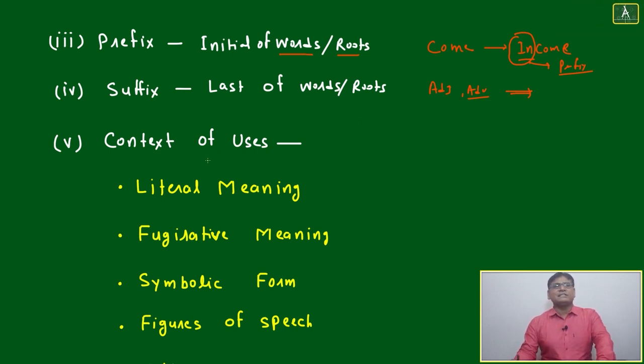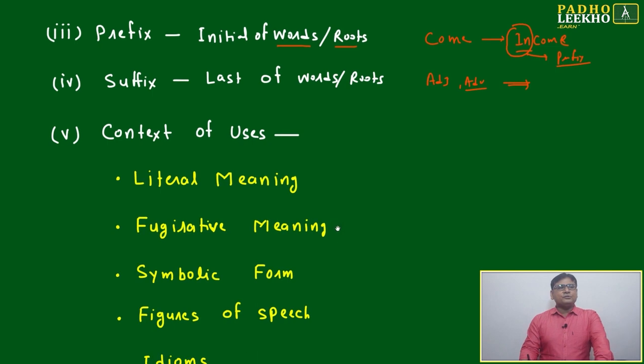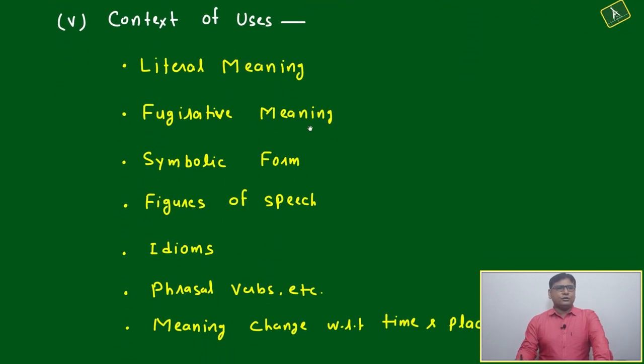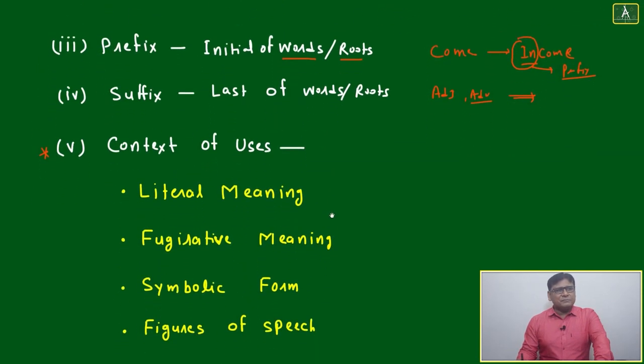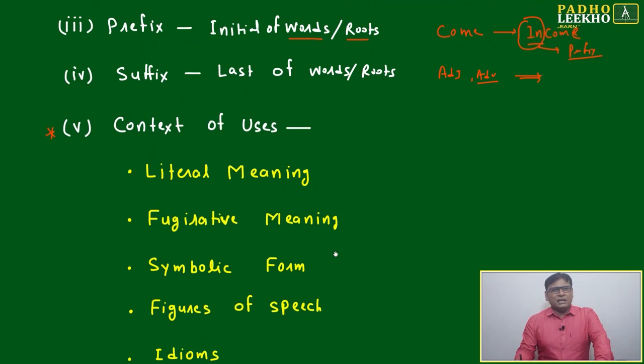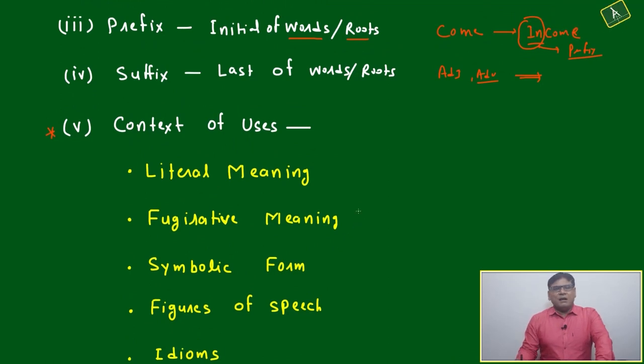Context of use - this is your most important part because that is only challenging and here mainly CAT aspirants are not able to grasp properly. Because this prefix, suffix, root, they are having limitation.